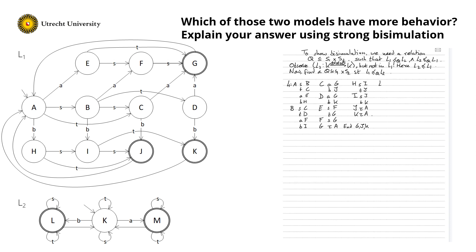Similarly for L2: in K, I can do an S that brings me to K, a T that brings me to K, an A that brings me to M, and a B that brings me to L. In L, I can do an S that brings me to L, a T that also brings me to L, and a silent step Tau that brings me back to K. And in M, I can do an S that brings me to M, a T that brings me to M, and a Tau that brings me back to K.